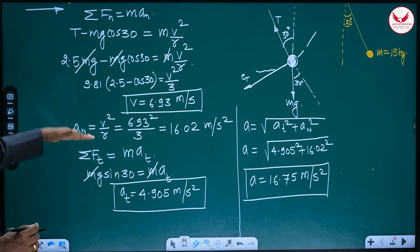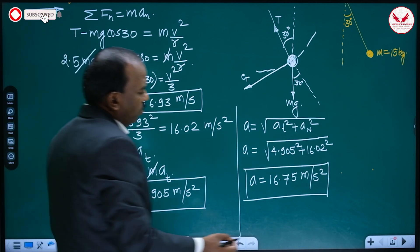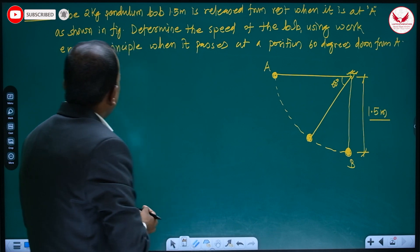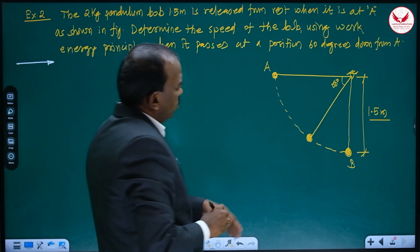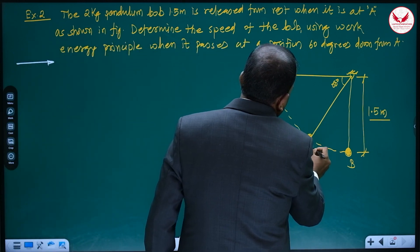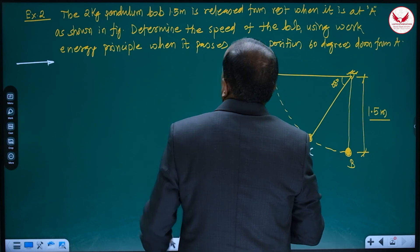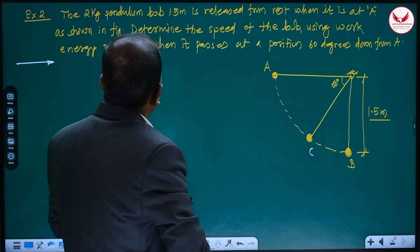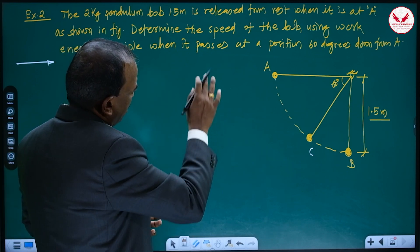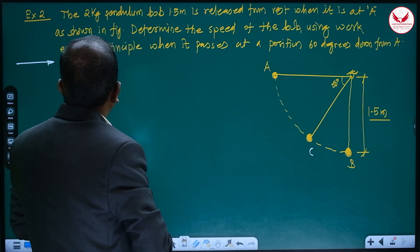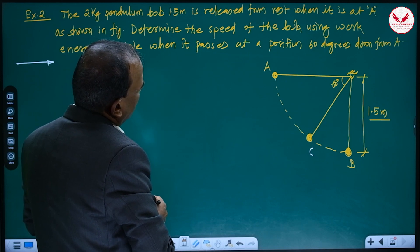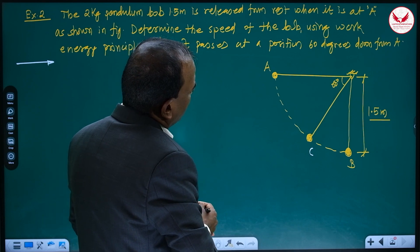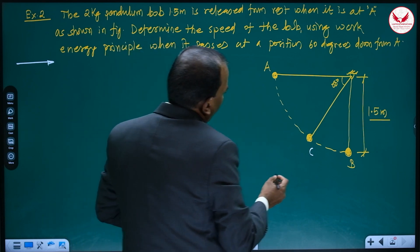Like this, such problems can be easily solved — we get the velocity and acceleration. Now we will go to the second example. A 2 kg pendulum bob on a 1.5-meter string is released from rest at position A as shown in the figure. Determine the speed of the bob using the work-energy principle when it passes a position 60 degrees down from A.